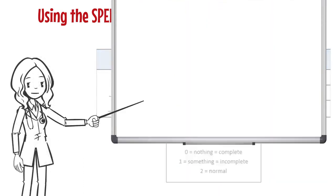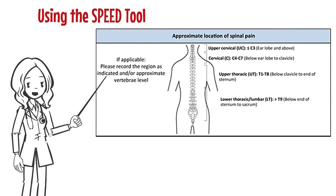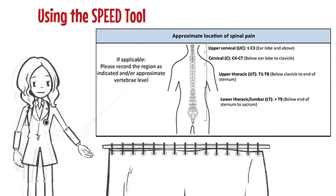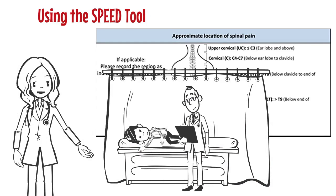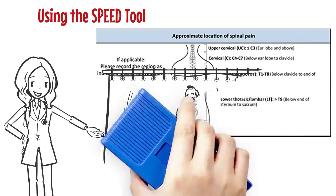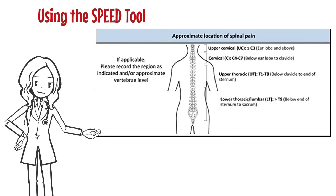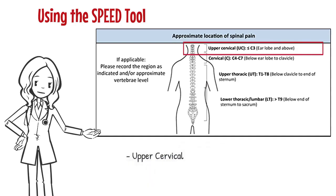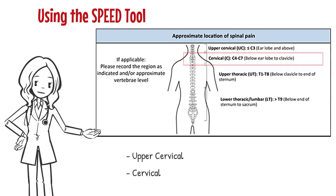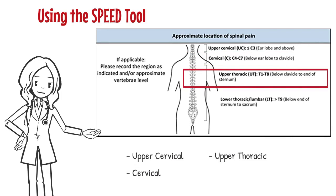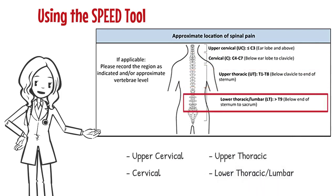The last part of SPEED is an assessment of pain or tenderness along the spine posteriorly. The presence of pain is obtained by talking to the patient, while assessment for tenderness is performed during the log roll. For SPEED, the location of spinal pain or tenderness is classified in one of four levels, each corresponding to a level of motor deficit: upper cervical — earlobe and above; cervical — below the earlobe to the clavicle; upper thoracic — below the clavicle to the end of the sternum; and lower thoracic and lumbar — below the lower end of the sternum to the sacrum.